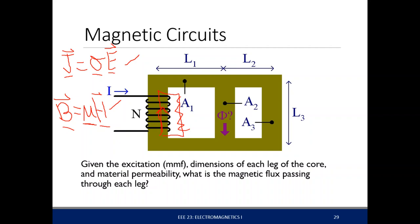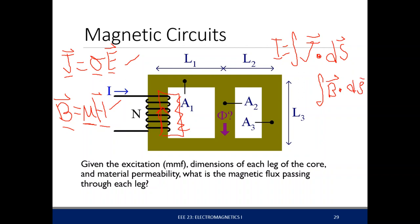If we integrate J over some surface — the cross-section of the conductor — we have our current. We can also do that with our magnetic flux density B: if we integrate B over some cross-sectional area of a material, the resulting value is your magnetic flux Φ. And that is actually the current that is flowing in our magnetic circuits.